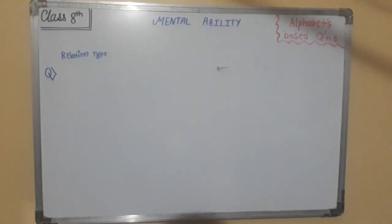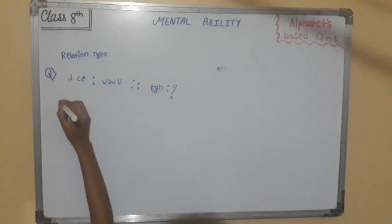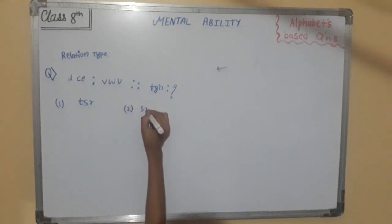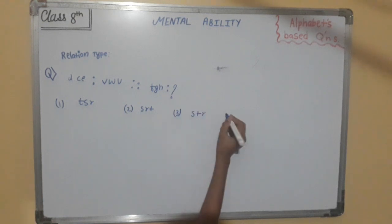Next question is relation-based question. It is D, C, E; V, W, U; and then F, G, H. The options are: first is T, S, R; second is S, R, T; third is S, T, R; fourth is R, S, T.